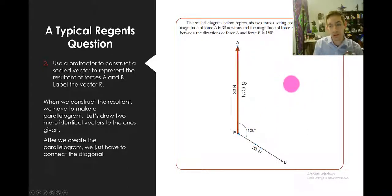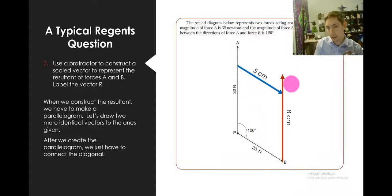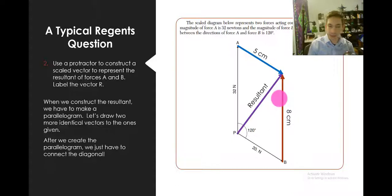So again, we measure 8 centimeters, slide it over, measure 5 centimeters, slide it over, and we connect the diagonal. That is how we create the resultant every single time. If you have to draw the resultant, this is the method we can use, the parallelogram method.